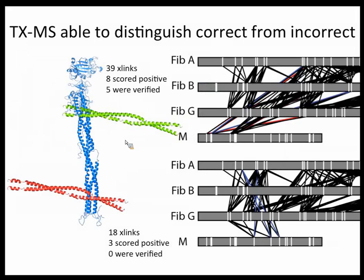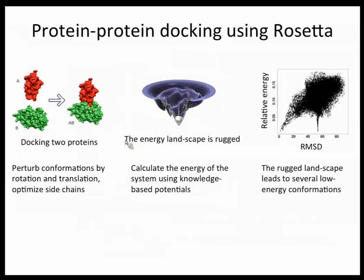For protein docking, the approach works reasonably well when you have a crystal structure with correct packing; in other cases, noise levels are very high. The idea is the same as normal structural modeling: perturb the conformation by rotation and translation, optimize side chains, and determine model quality with a statistical energy function, getting rugged low-energy conformations. In the Capri blind prediction benchmark, roughly 20 or so models are produced if the system is easy — there is hope we can get close.